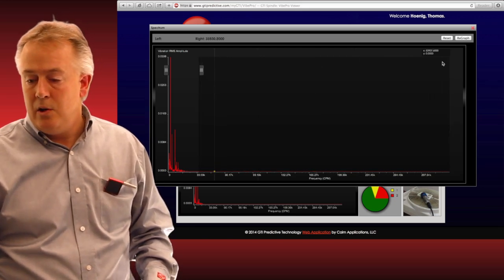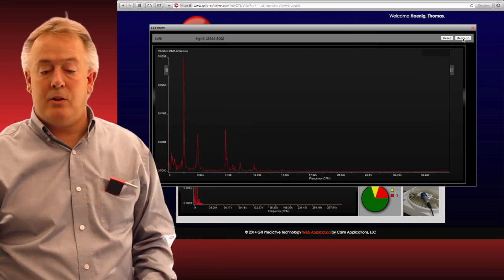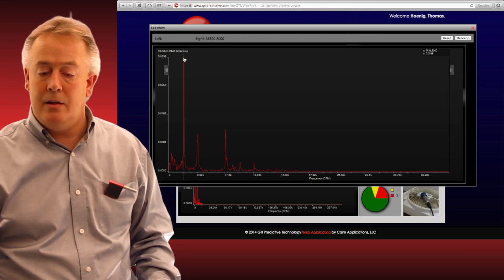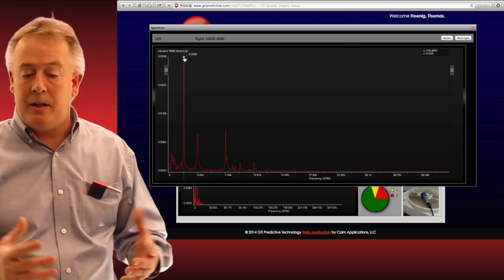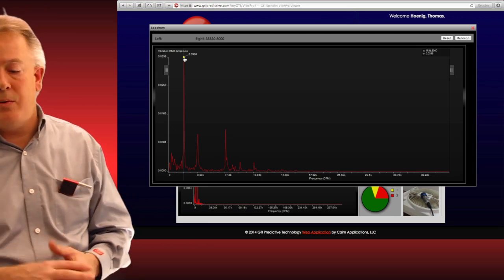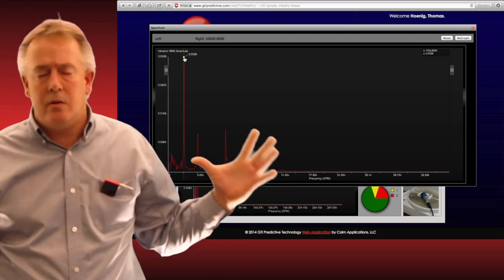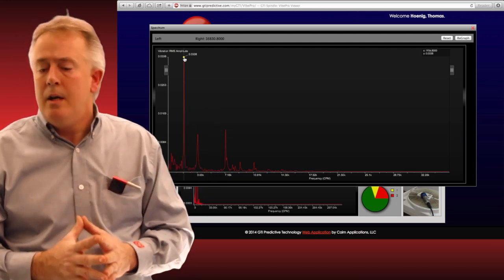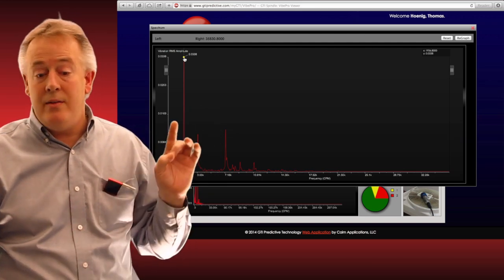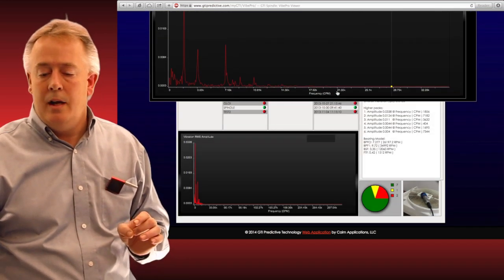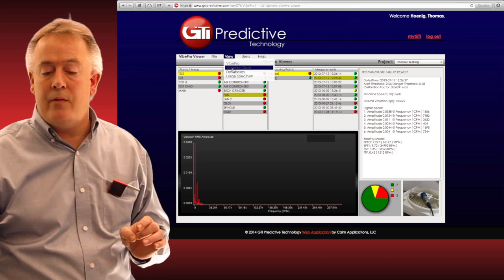This way I can really drill in, bring these wings over, regraph it, pull that spectrum out so that I can look at the one times running speed peak here. I can click on that market so I've got its amplitude and its frequency. I could look for bearing markers, RPM markers. All that is heavily loaded onto this post-processing device.